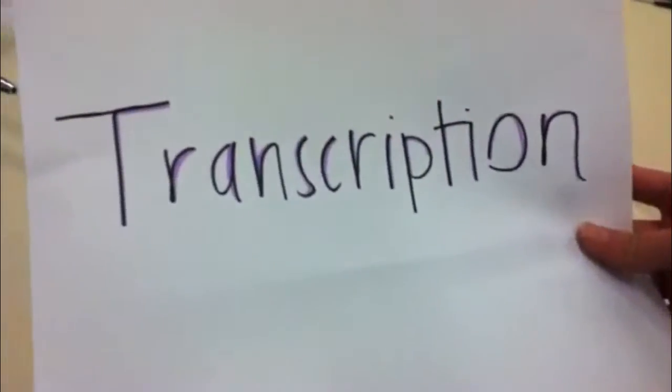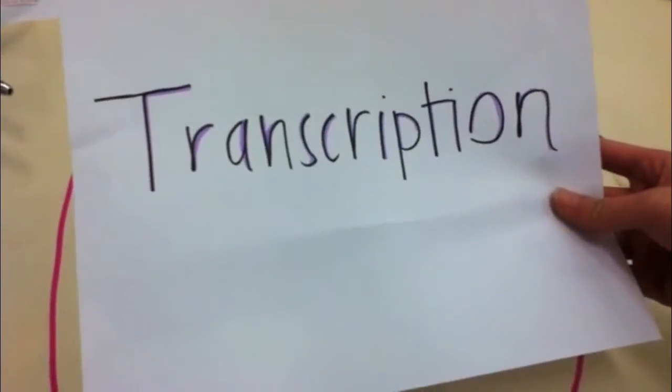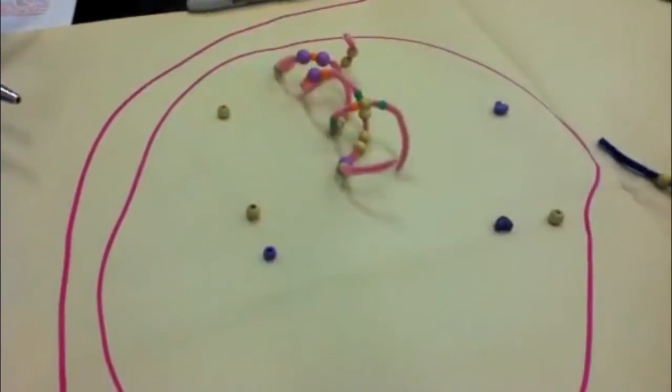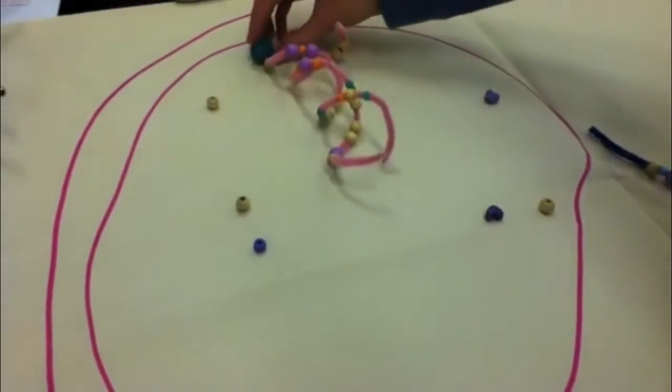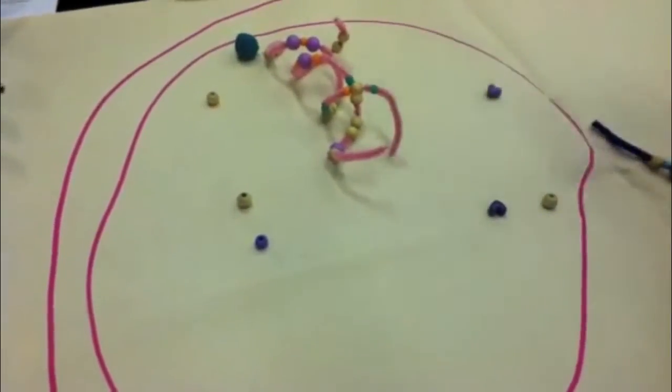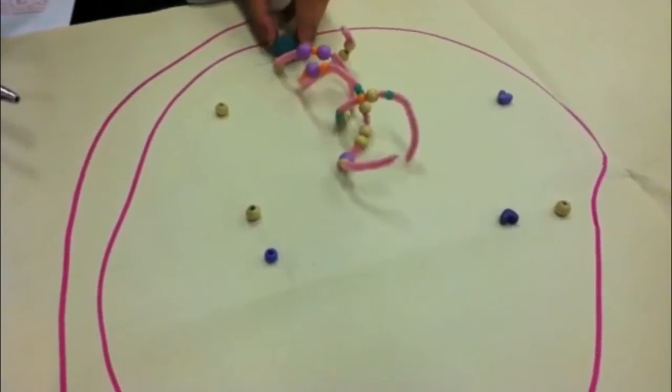Genes provide the instruction for making specific proteins. RNA polymerase binds to the promoter of the DNA and unwinds the strand. The promoter determines which strand is used as a template.